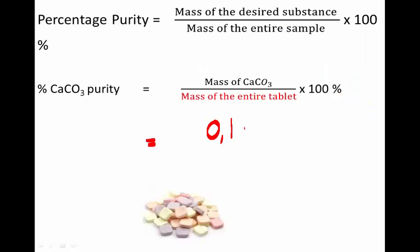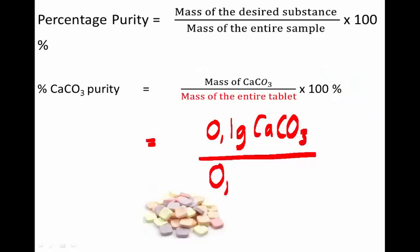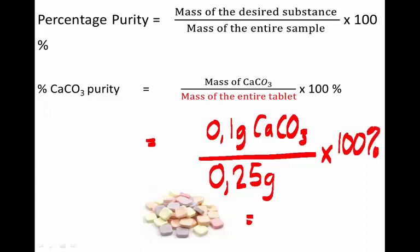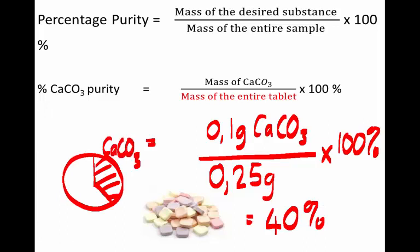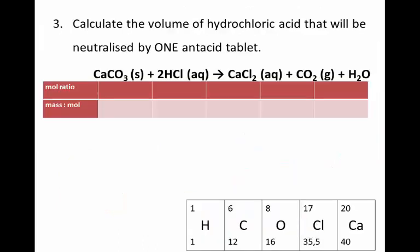So 0.1 grams of that tablet was calcium carbonate. We were told that 0.25 grams is the mass of the whole tablet. We simply convert that into a percentage, and we see that 40% of this tablet was calcium carbonate, which means that 60% was other stuff, which we could call impurities.